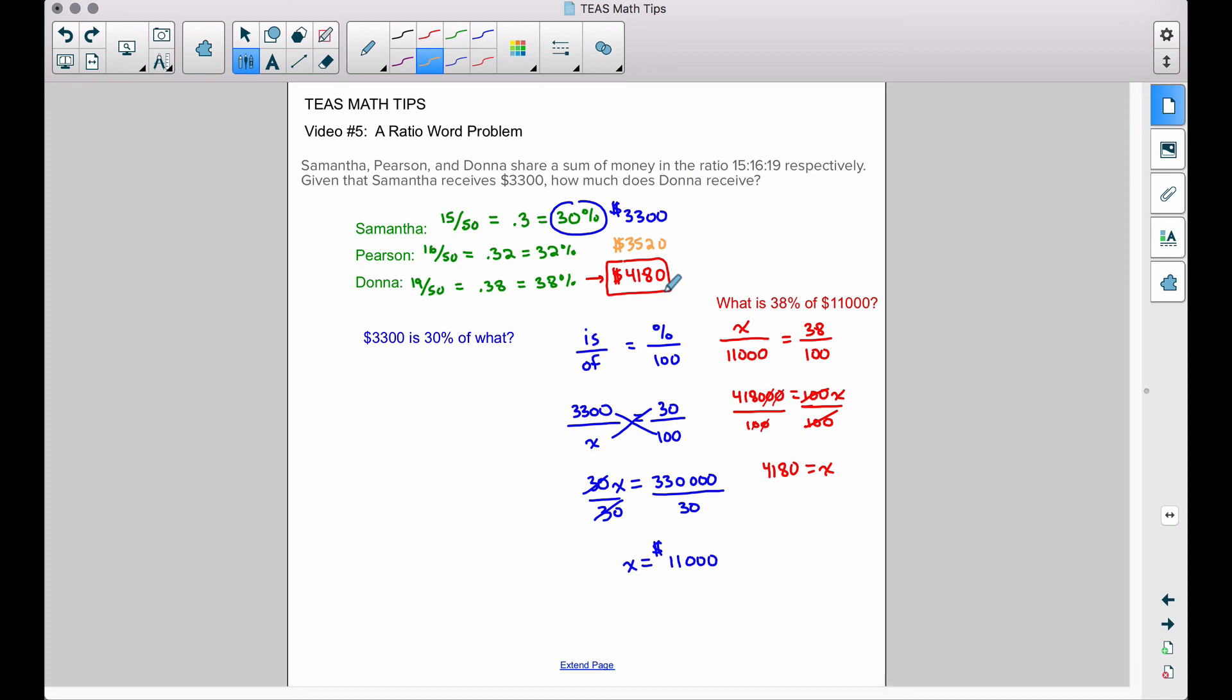But with all that said, we do want to find how much Donna did receive. That was the $4,180. But I wanted to go over some shortcuts, and the biggest shortcut here is this: when you want to find a percentage of a number and you know the percent and you know the number, like right here in red, we wanted to find 38 percent of $11,000.